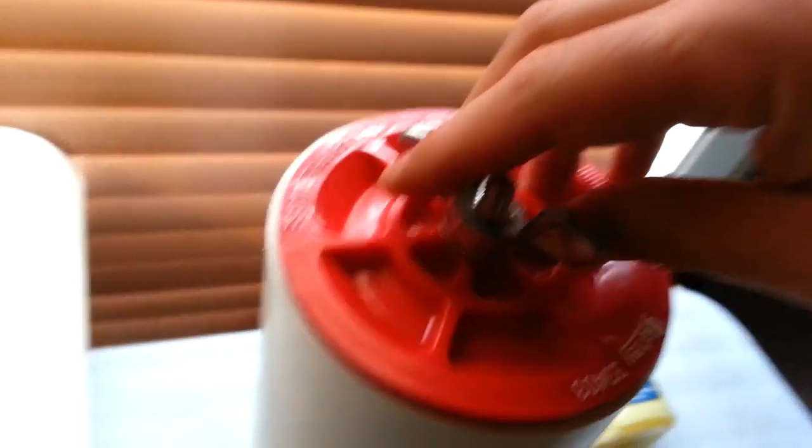So what you do is you just put it in the top of your tube, you go like that, and you just tighten it up just like that. And as you tighten it, what it does is it expands to give you a watertight seal.